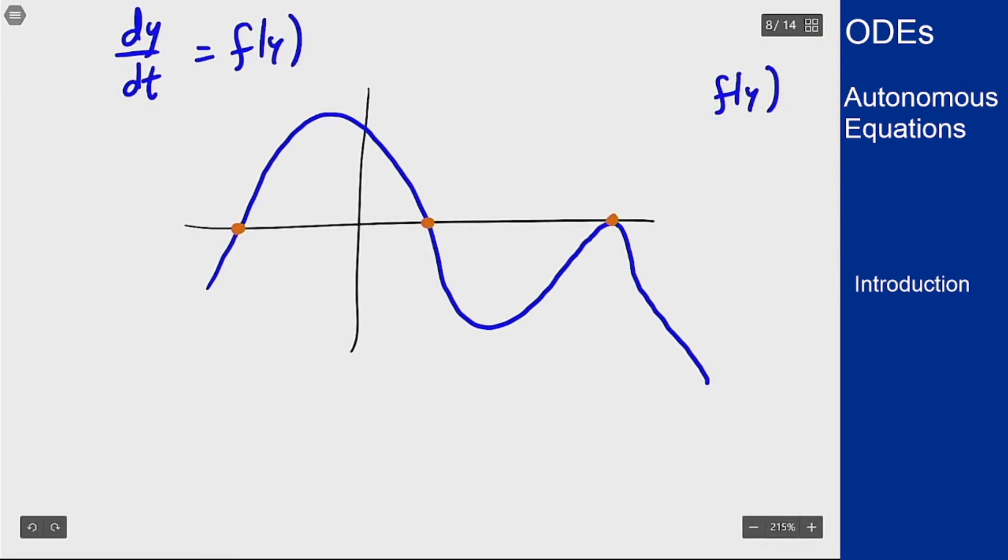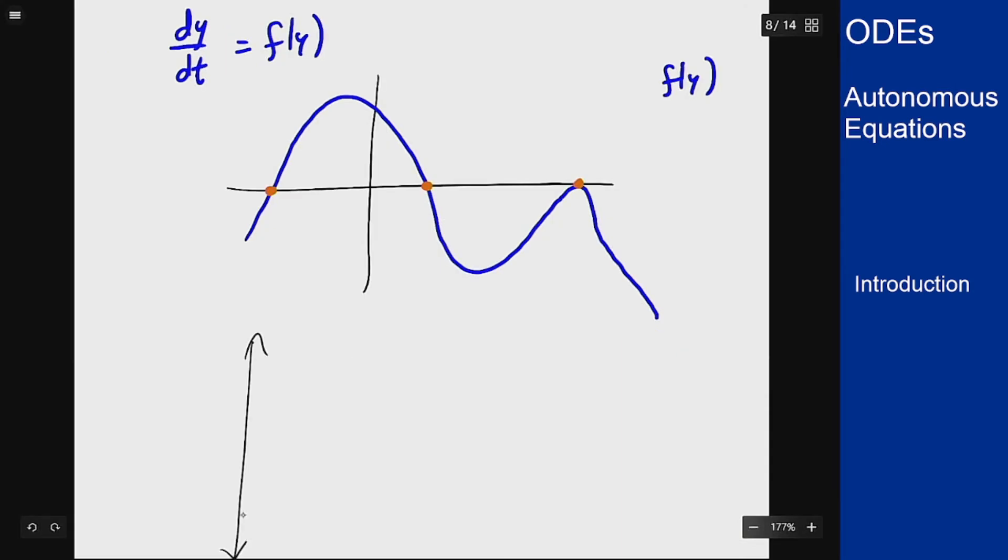Well if you look at this first one here, we have our three solutions, one here, one here, and one here, give or take. And for the first one, f(y) is negative for y less than this point and it's positive for y bigger than it, which means here we're going down, here we're going up. So we have down up and we can see right here this will be unstable. Everything's going away at that point.